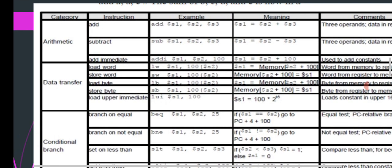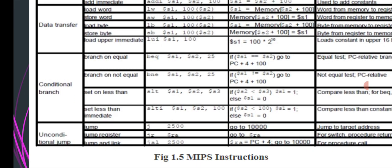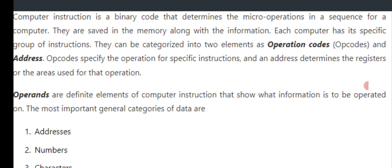So this is the basic operations of arithmetic operators: data transfer, conditional branch and unconditional jump instruction. These are the basic MIPS instructions. Computer instruction is binary code that determines the micro-operations in a sequence for a computer.